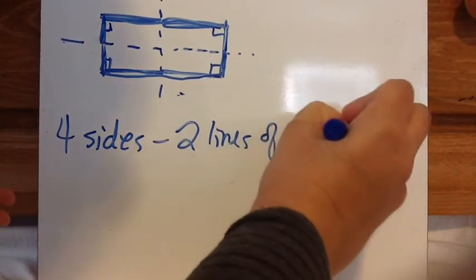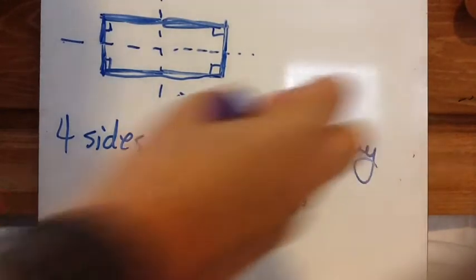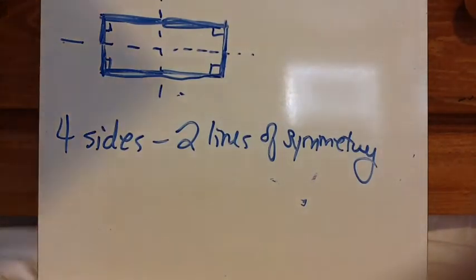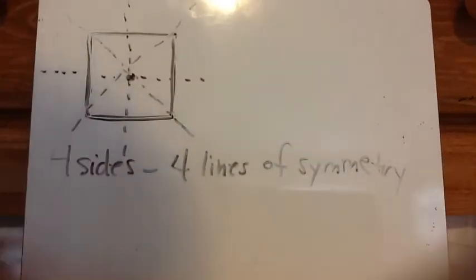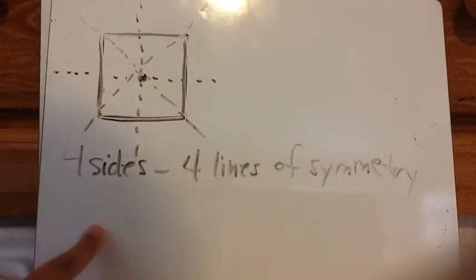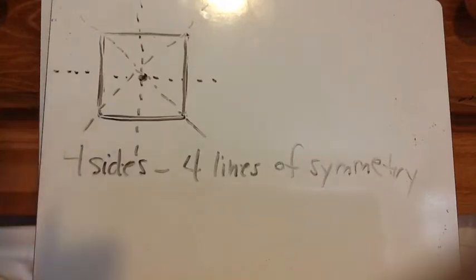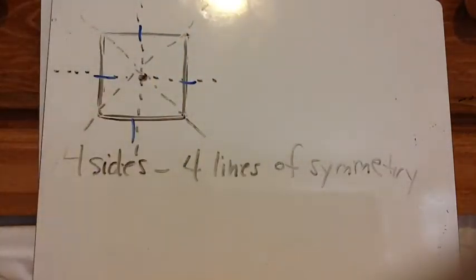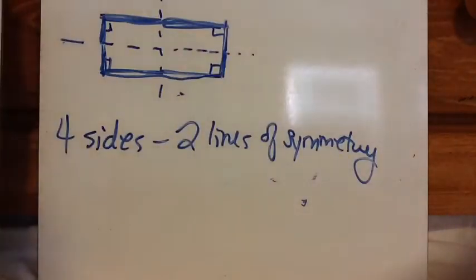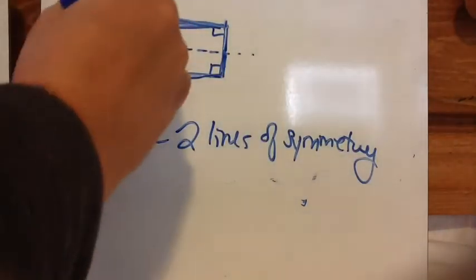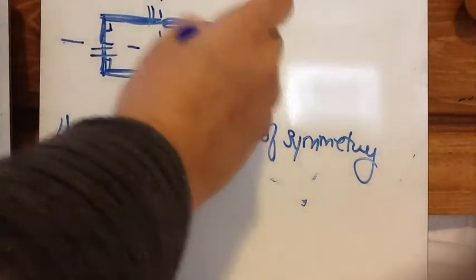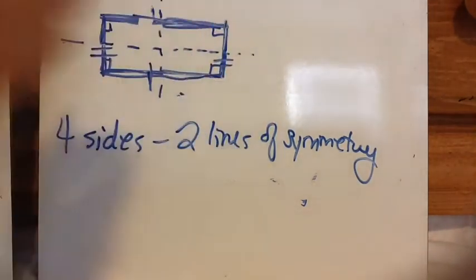So this kind of makes us rethink our theory - this rectangle has four sides, but only has two lines of symmetry. What I want you to understand is that just because it has seven sides doesn't mean it has seven lines of symmetry. Just because it has four sides doesn't mean it has four lines of symmetry. The reason the square has four lines of symmetry is because all four sides are the same length. With this rectangle, are all four sides the same length? No - these two are the same length and these two are the same length, so that changes things.